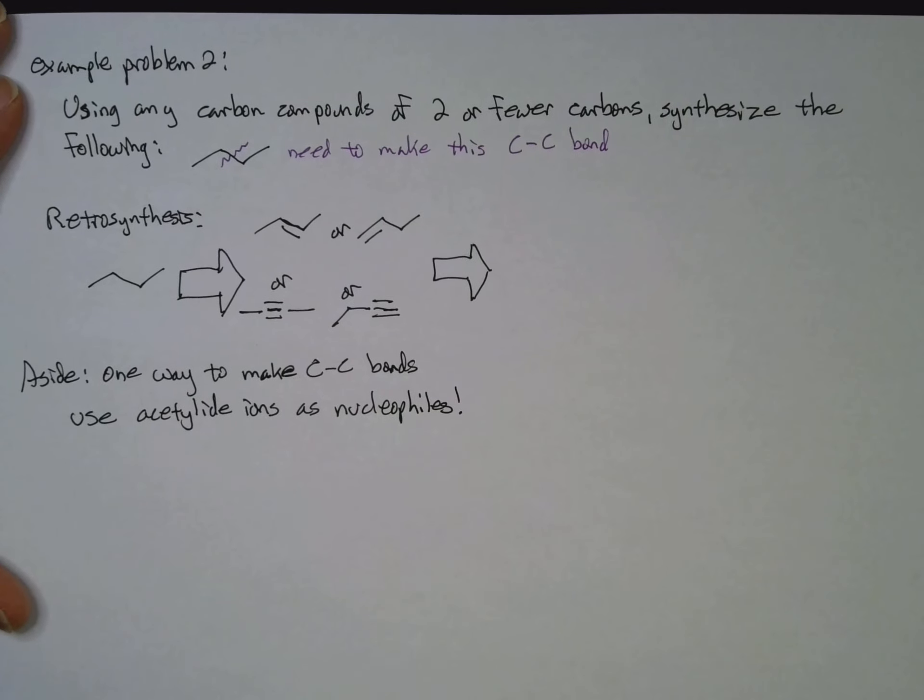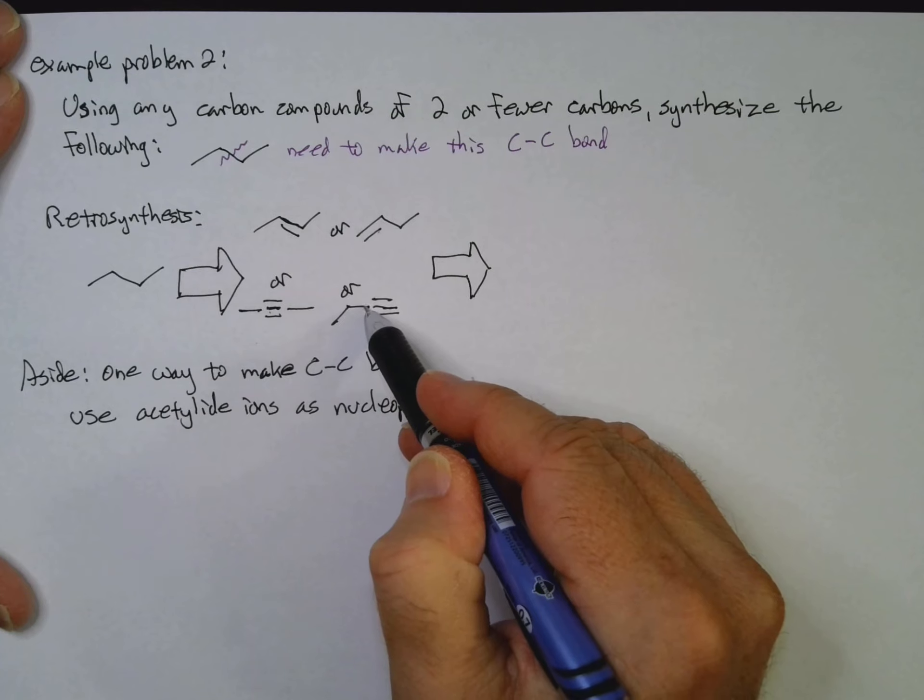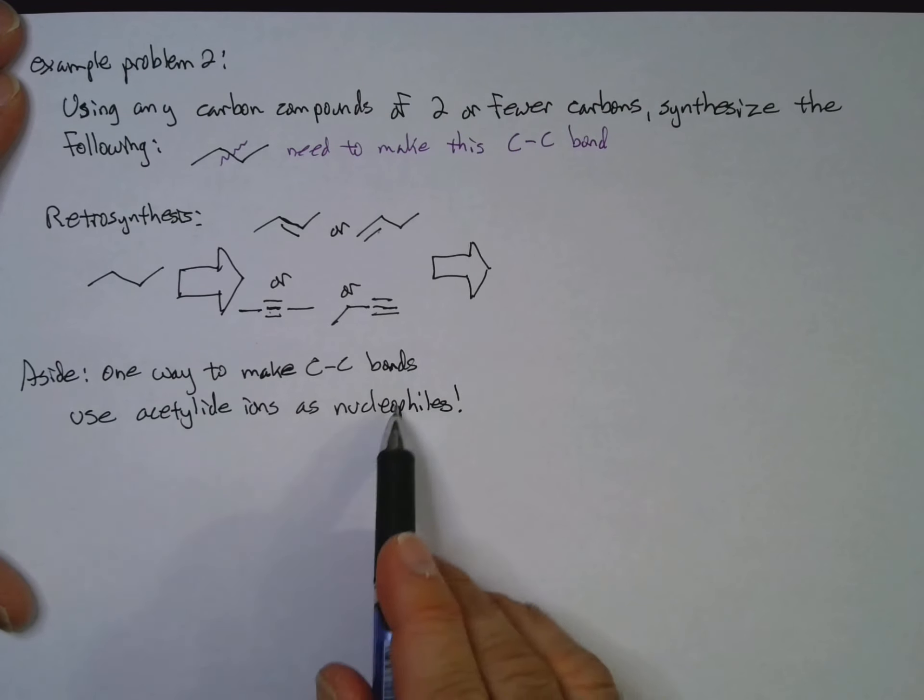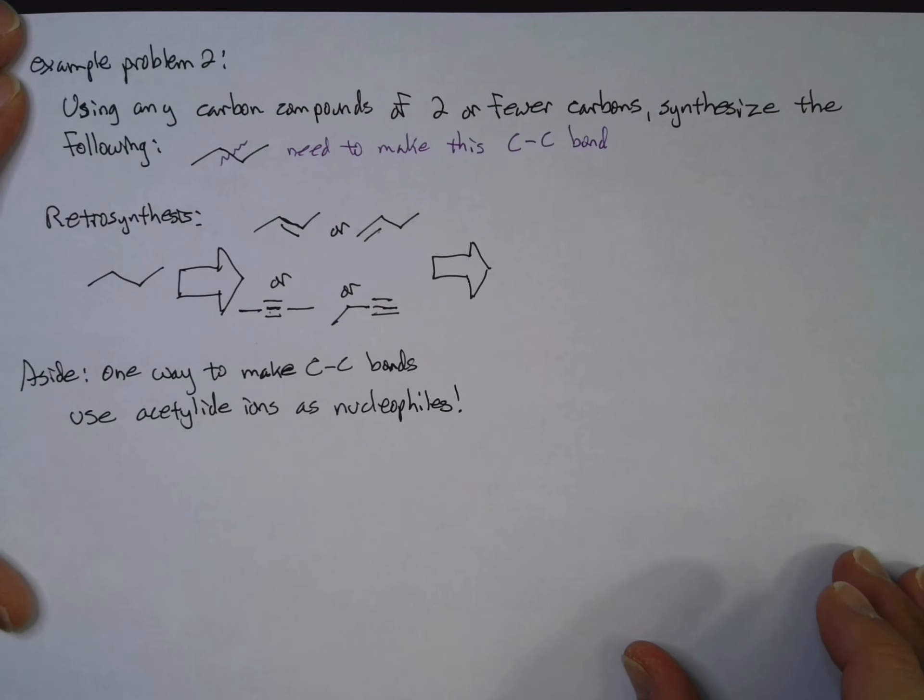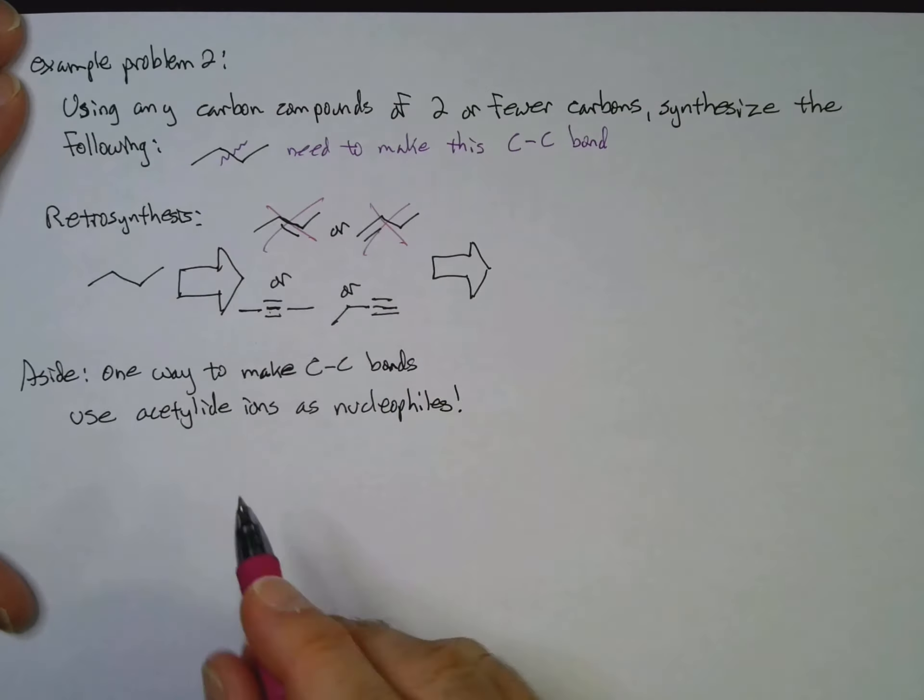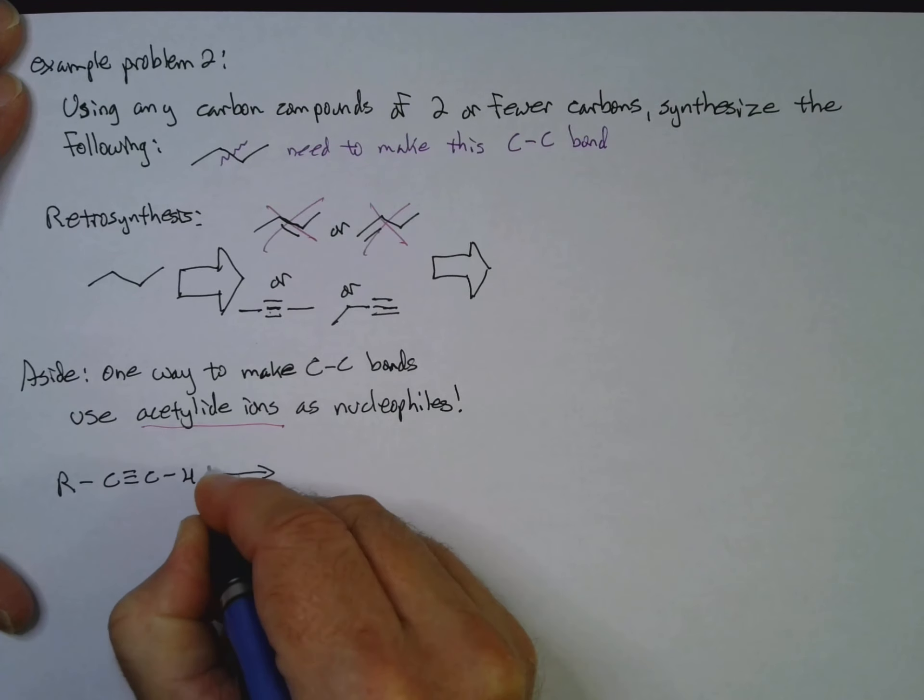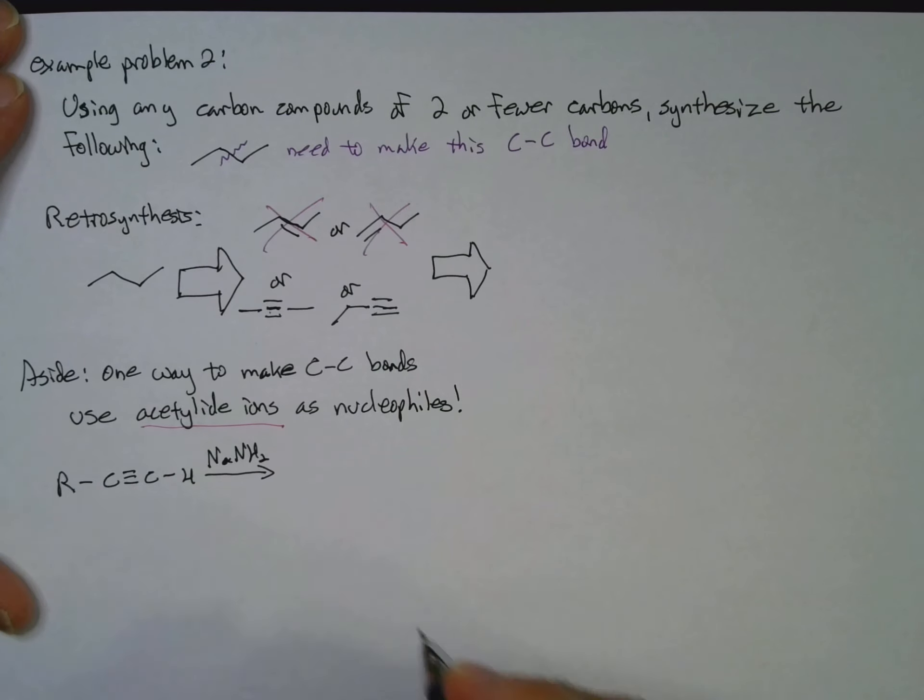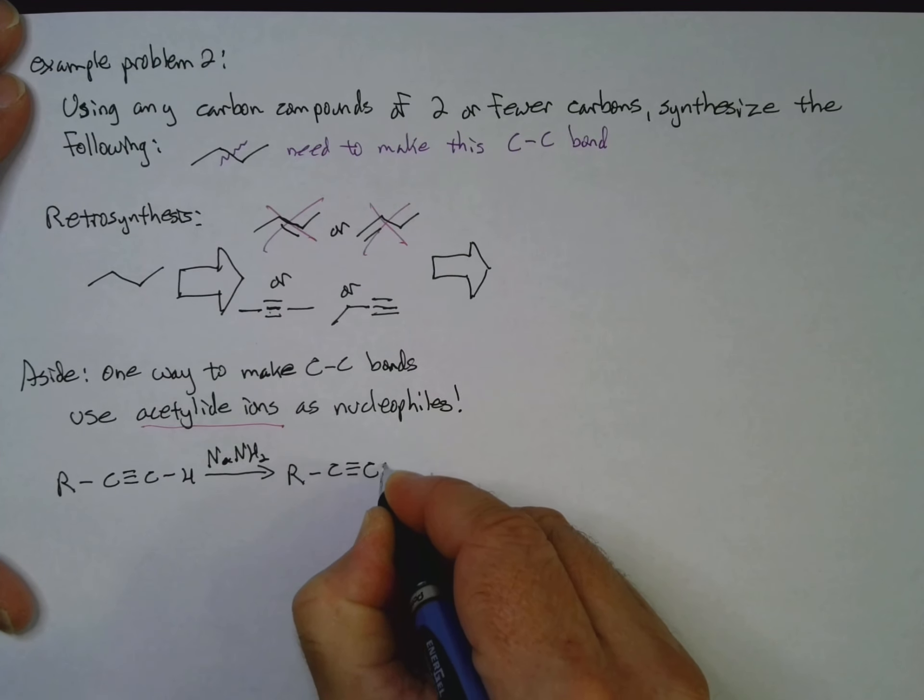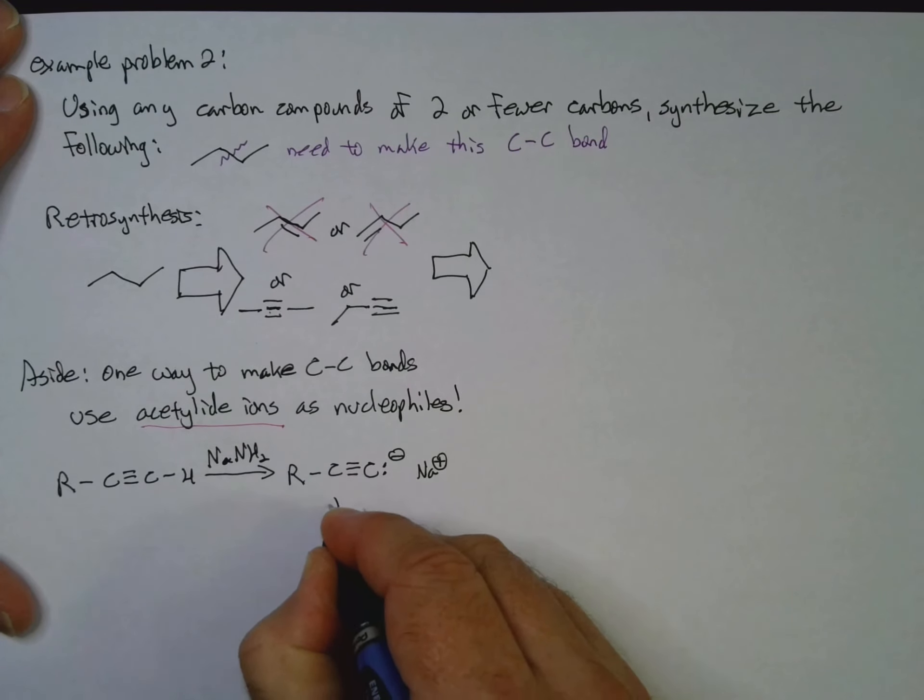But one way that we can make carbon-carbon bonds is to use acetylide ions as nucleophiles. All right. Now, the reason why I'm doing this aside is that I'm going to try to figure out which of these could perhaps I make using a carbon-carbon bonding form reaction. So I know that, I know it's not going to be one of these guys because I'm going to be using acetylide ions. And so what we do is, if I have R, C, triple bond, C, H, and I treat that with NaNH2, sodium amide, and I get R, C, triple bond, C, lone pair, and Na+, plus NH3. But this guy here is our nucleophile.